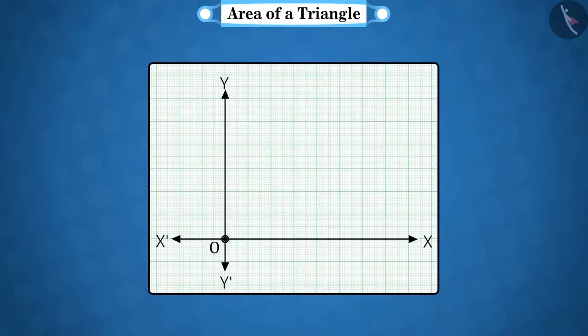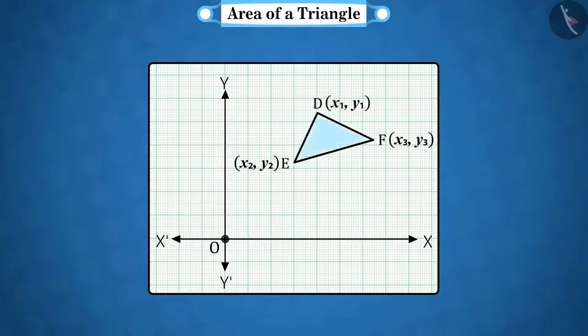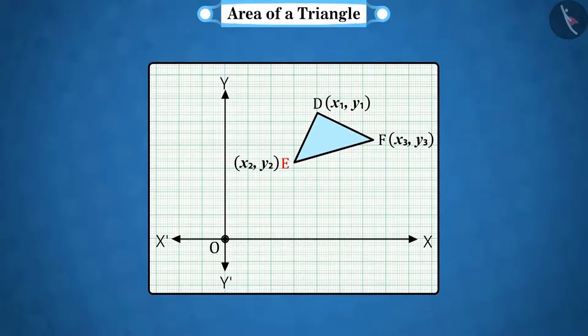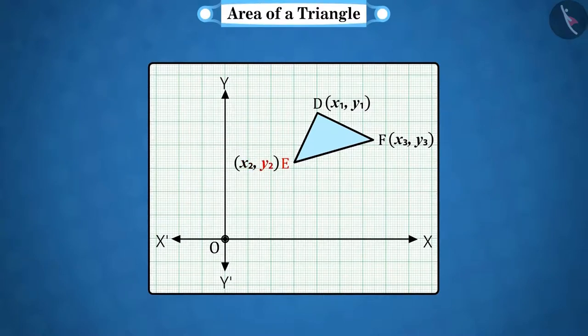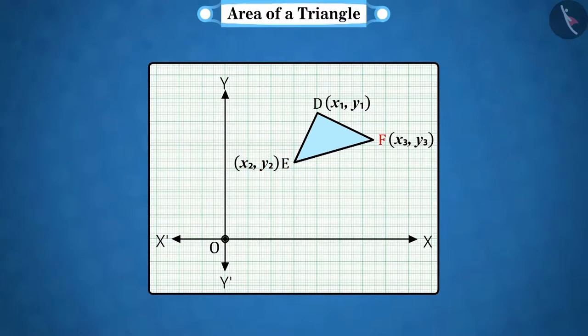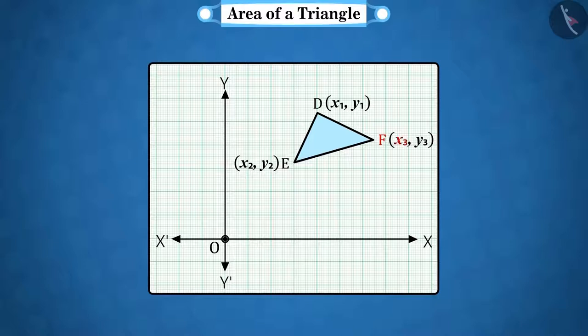In a plane with x-axis and y-axis, let DEF be a triangle. The coordinates of the vertex D are x1, y1. The coordinates of E are x2, y2. And the coordinates of F are x3, y3.